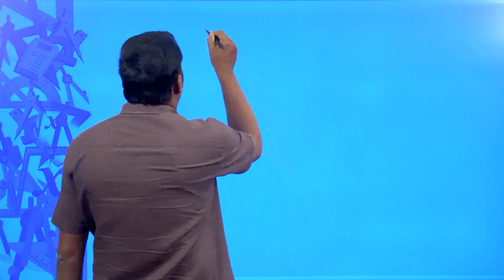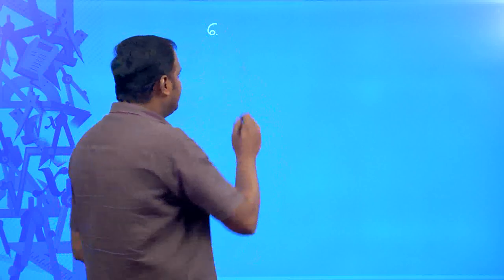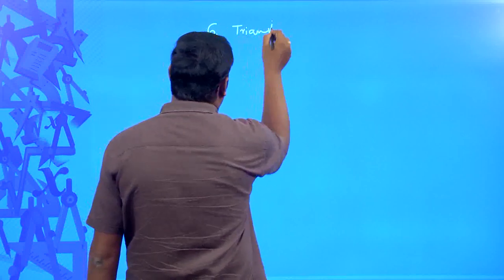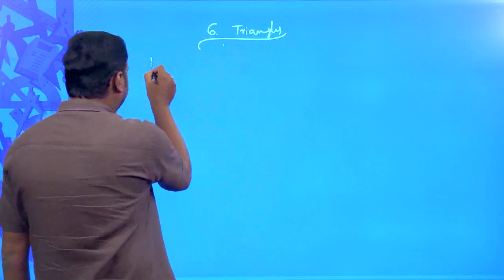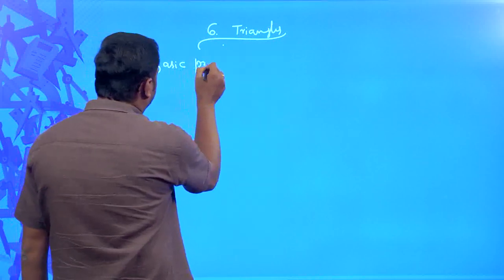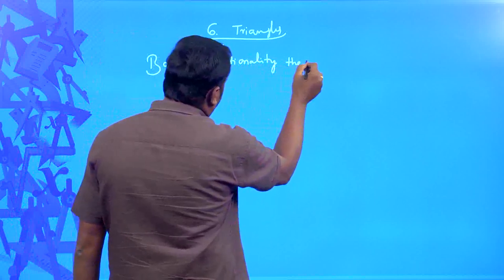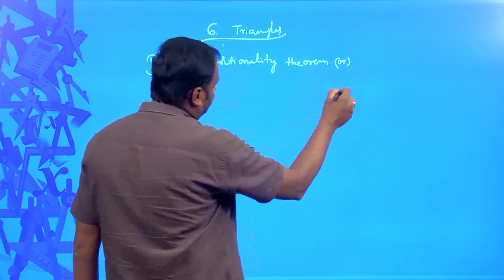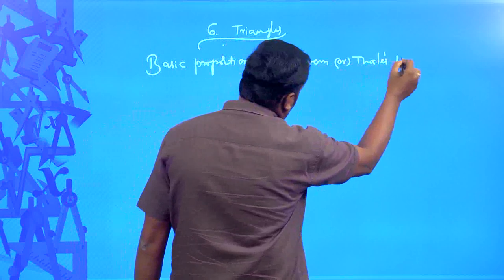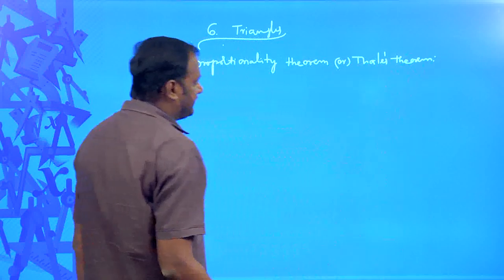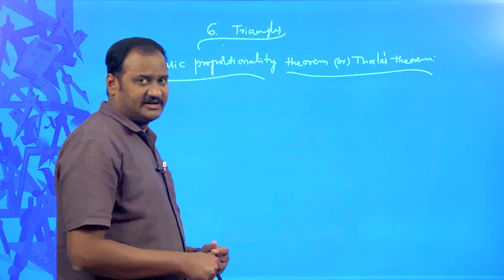Let us try to understand what is the theorem proposed by Thales. That theorem is also named as the basic proportionality theorem. Why is it called Thales theorem? Because he proposed this theorem — that is why it is named as basic proportionality theorem or Thales theorem.